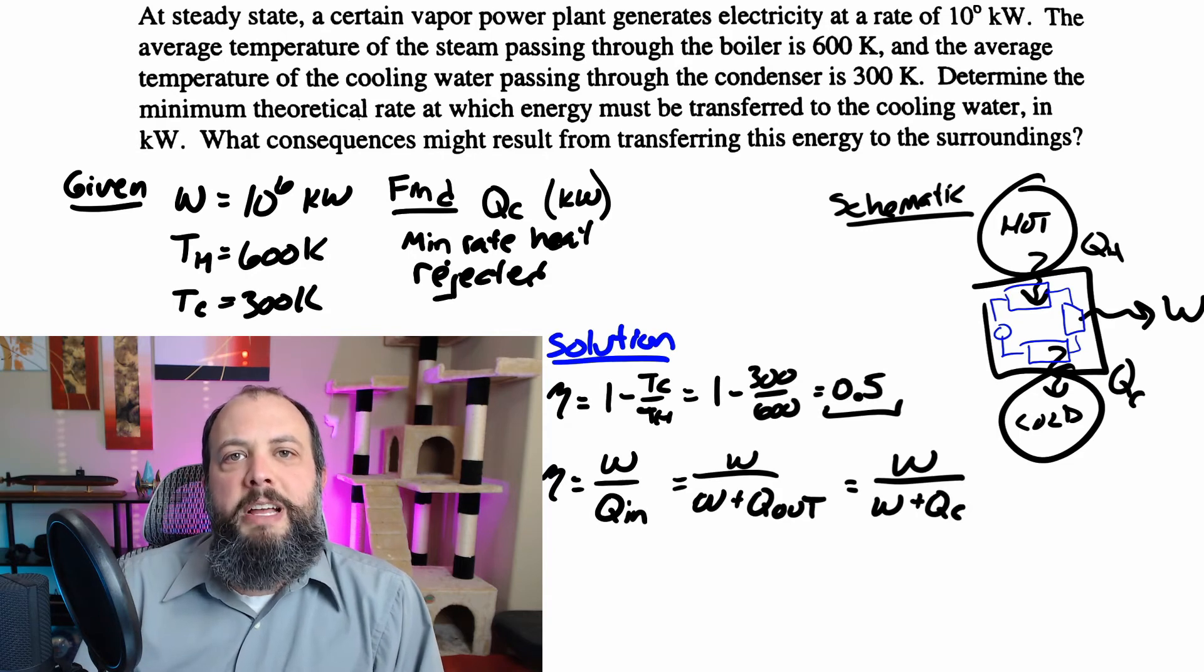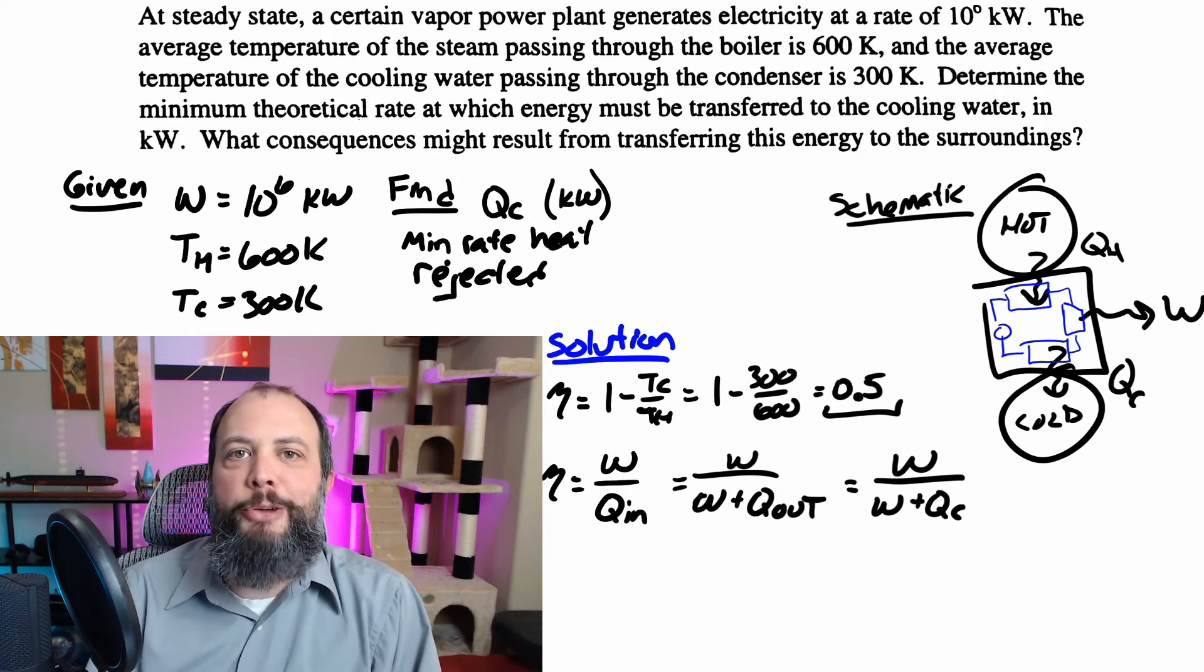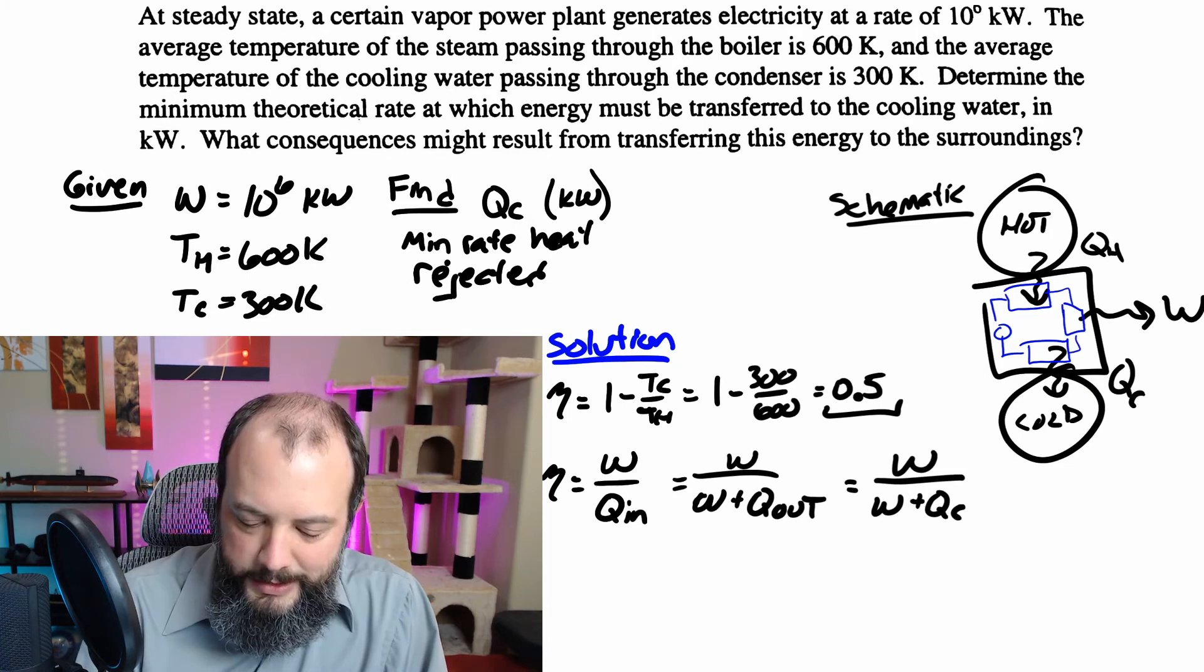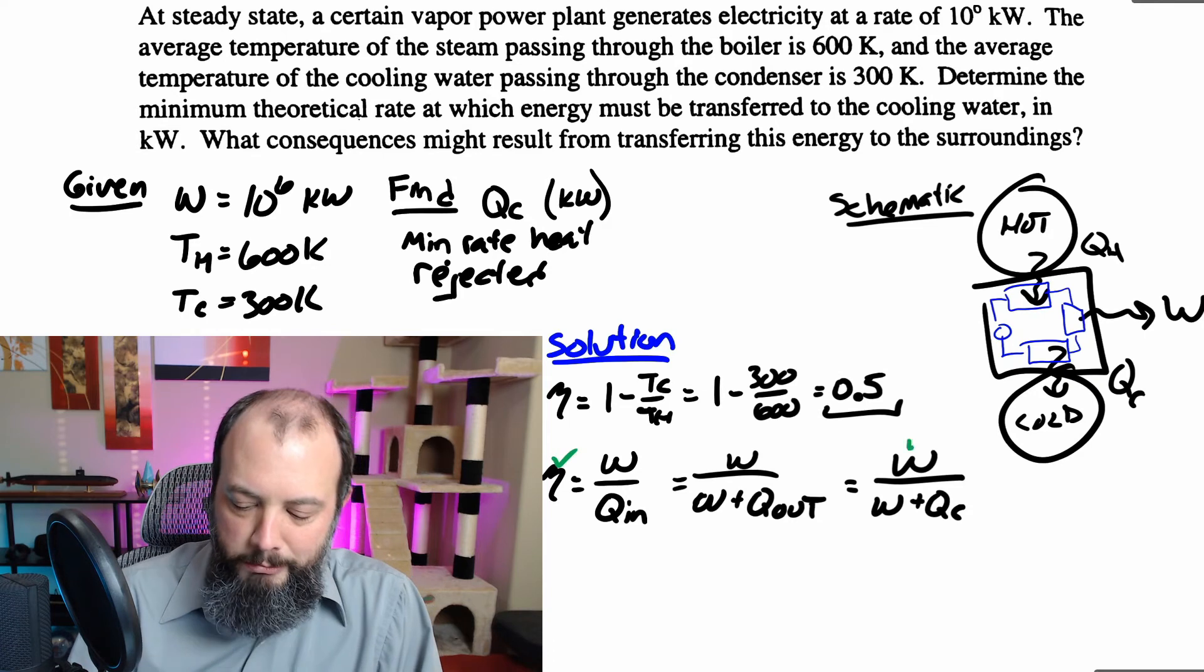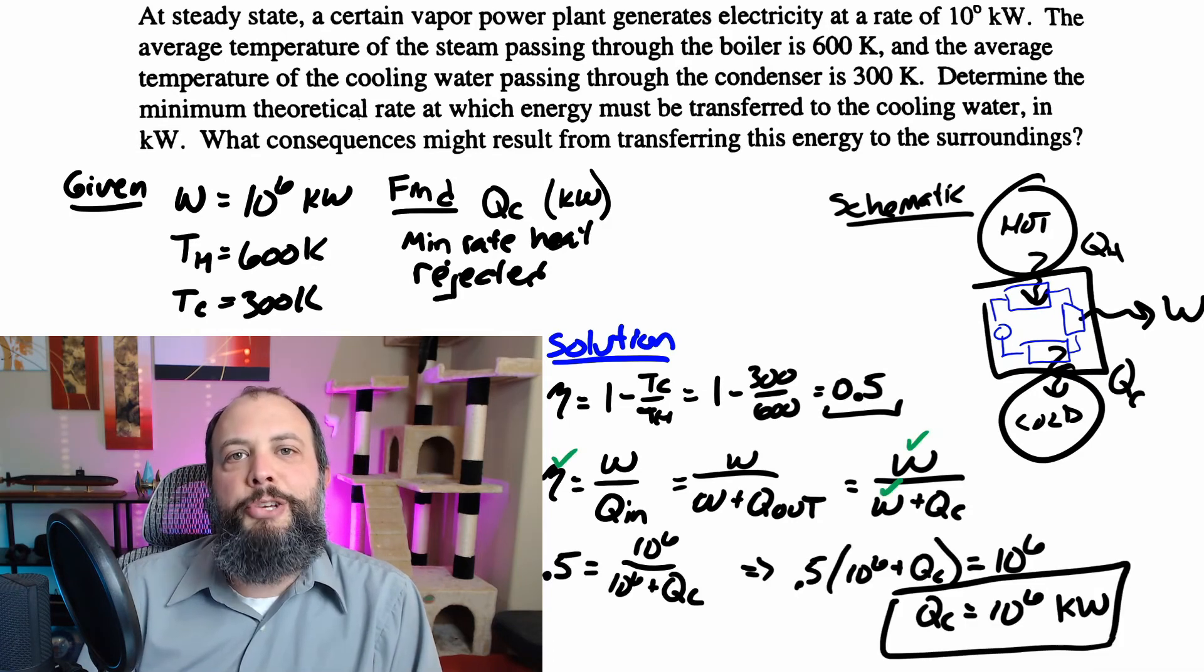So next step is I write down my efficiency equation, that efficiency is work over Q_in, and then note that I can replace the denominator, since I don't actually care about Q_H, I only care about Q_C, replace the denominator with work plus Q_C. And now since efficiency and work are known, Q_C is the only unknown left in this equation. So plugging numbers in, we find out that Q_C ends up equaling work also at 10^6 kilowatts. And after writing down my answer, I see now that my terminology has actually been wrong.